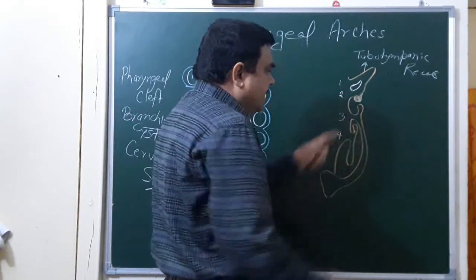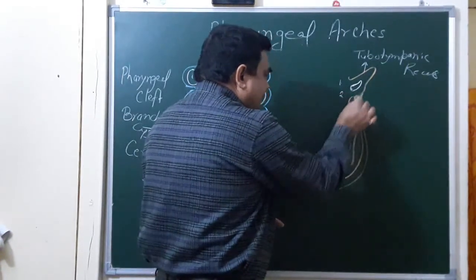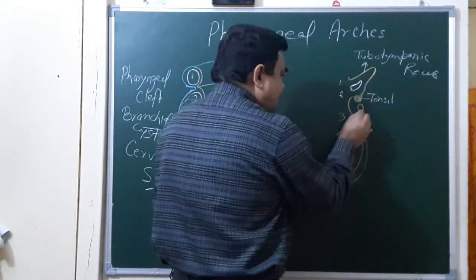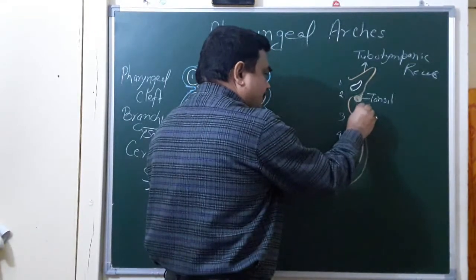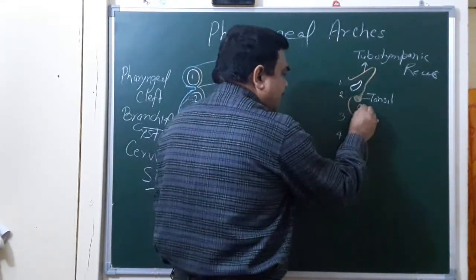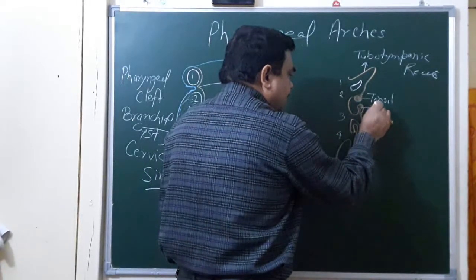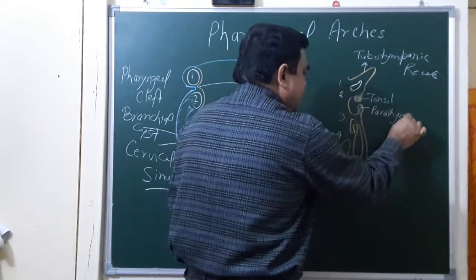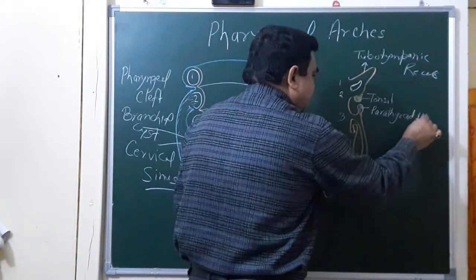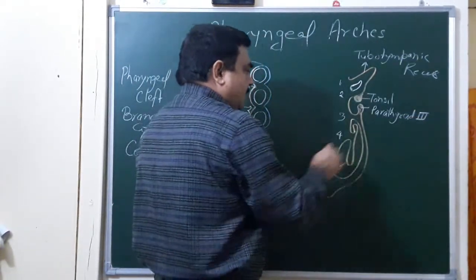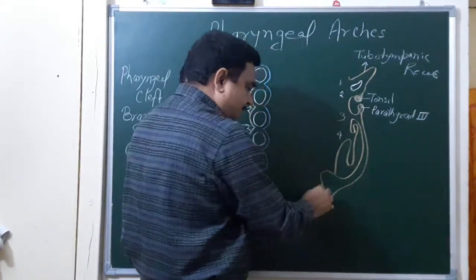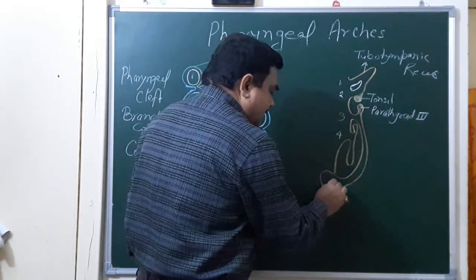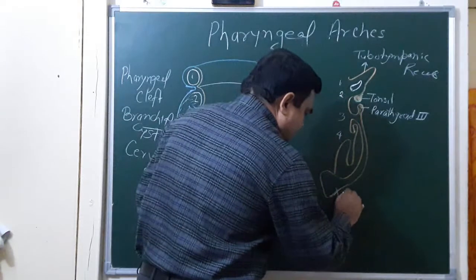The auditory tube and part of the tympanic membrane also derive from here. The ventral part of the second pouch forms the tonsil. The dorsal part of the third pouch forms the parathyroid — this is parathyroid III — and its ventral part extends into the neck and also into the thoracic region to form the thymus.